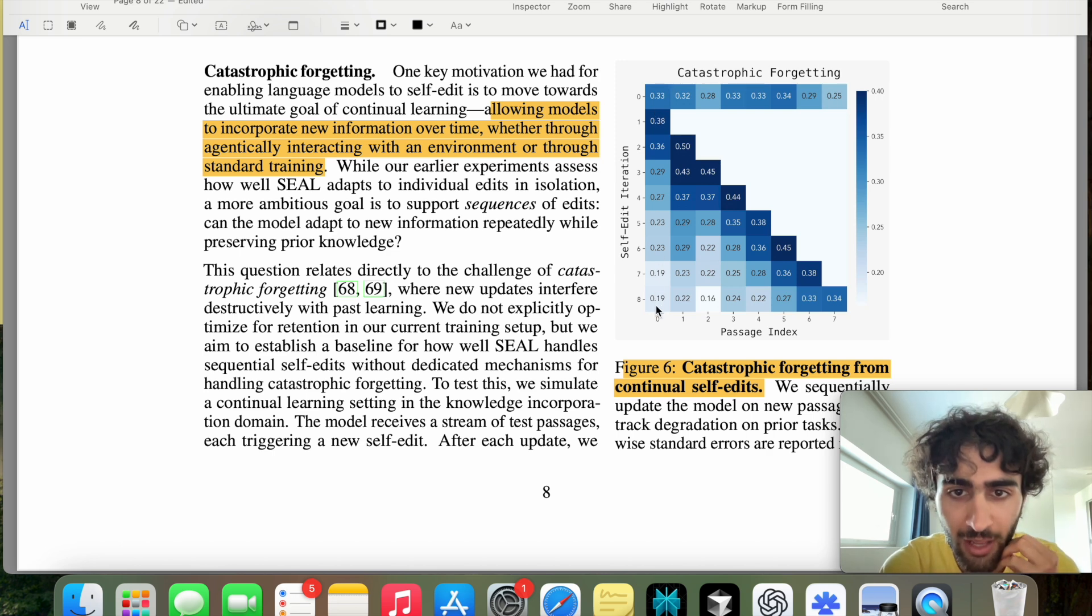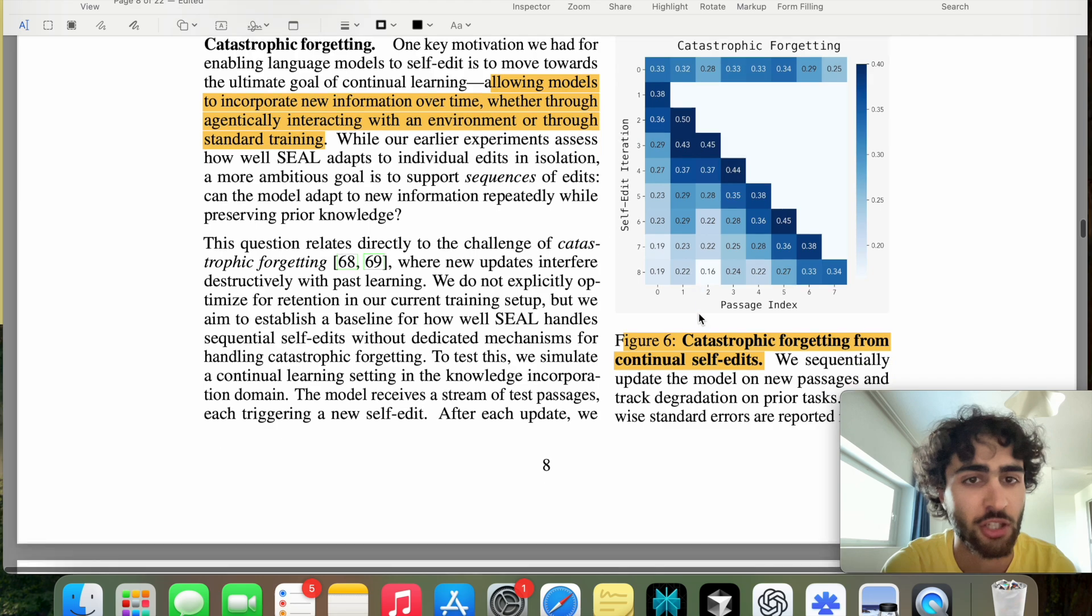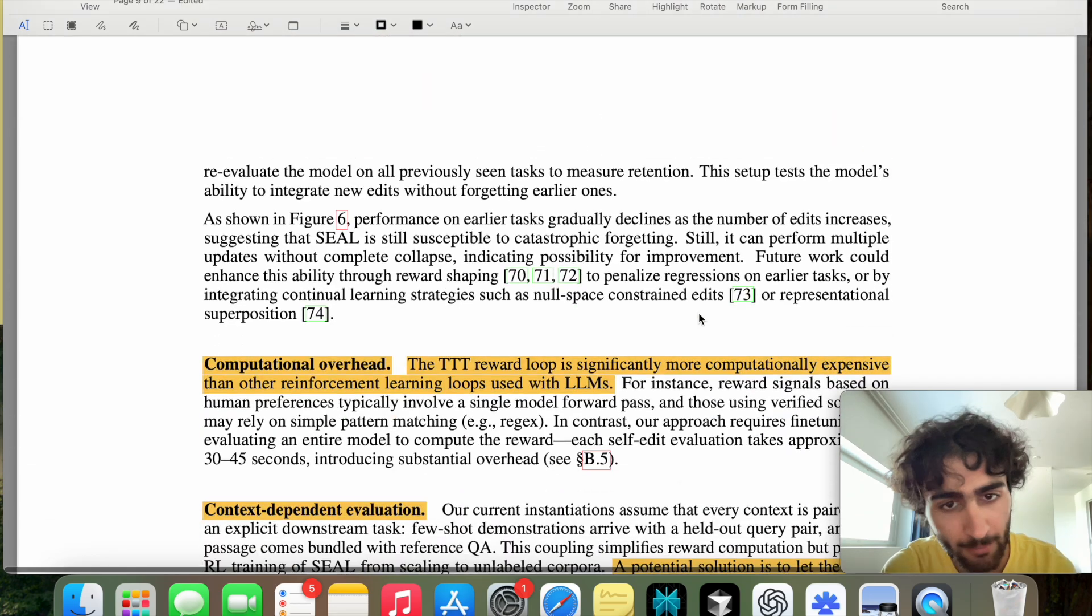What I like to look at is the first example, which means that in our first iteration, the performance on passage index zero improved a lot because we just trained on it. But then after the second, third, fourth, at the eighth iteration, after we've trained on the seventh passage index, the performance drops by double actually. So 0.38 to 0.09, meaning that the performance decreases over time for specific passages. But maybe this is just because it's a 1 billion parameter model. I'm just theorizing though.